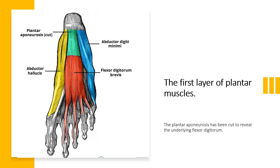There is a plantar aponeurosis — this is the fascia. The first layer of the muscles is the most superficial layer of the sole, located immediately underneath the plantar fascia.